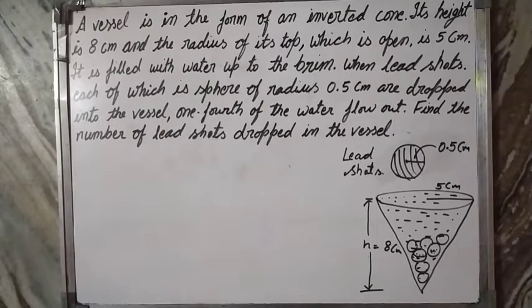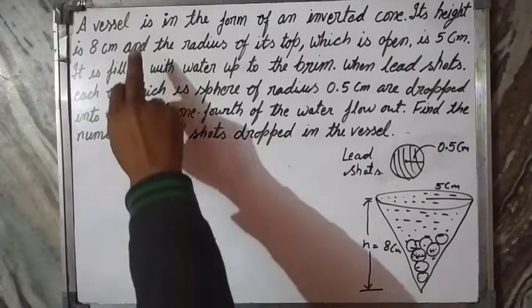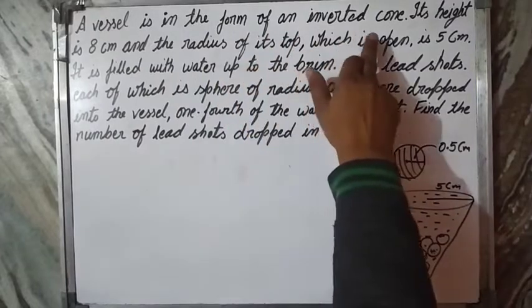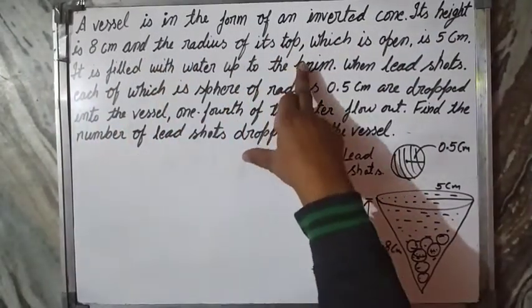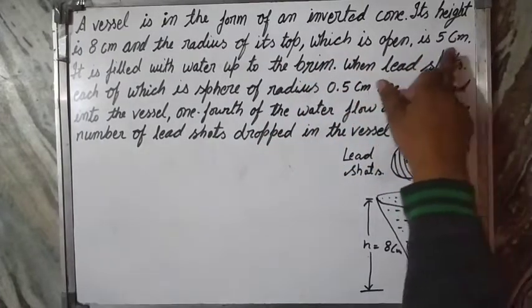Hello friends, surface area and volume is in the form of an inverted cone. Its height is 8 cm and the radius of its top, which is open, is 5 cm.